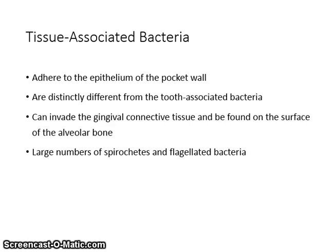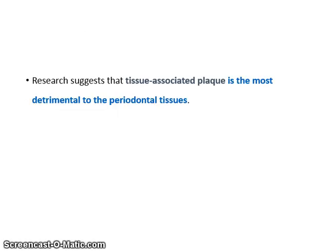Tissue-associated bacteria adhere to the epithelium of the pocket wall. They are distinctly different from the tooth-associated bacteria. They can invade the gingival connective tissue and be found on the surface of the alveolar bone. They include large numbers of spirochetes and flagellated bacteria. Research suggests that tissue-associated plaque is the most detrimental to the periodontal tissues.